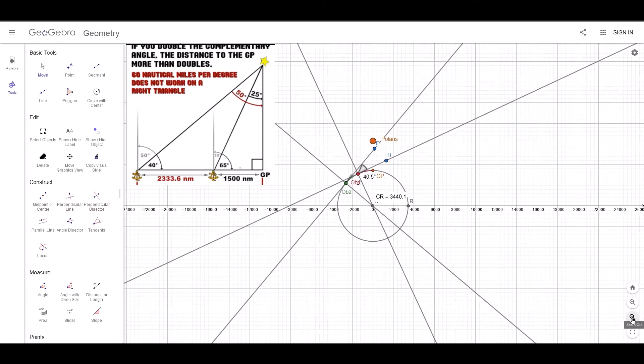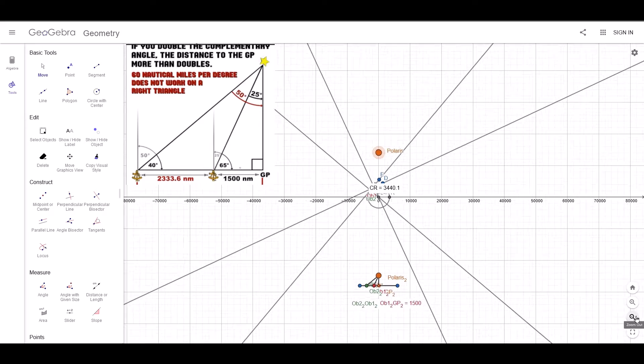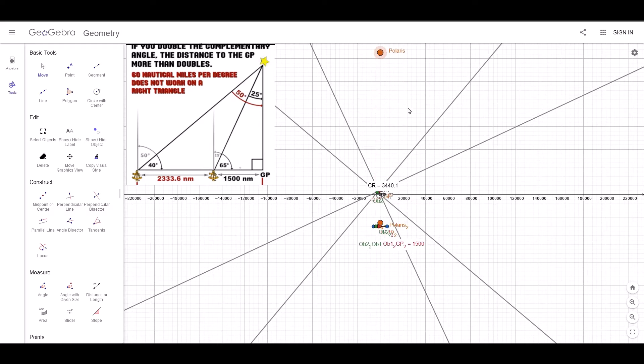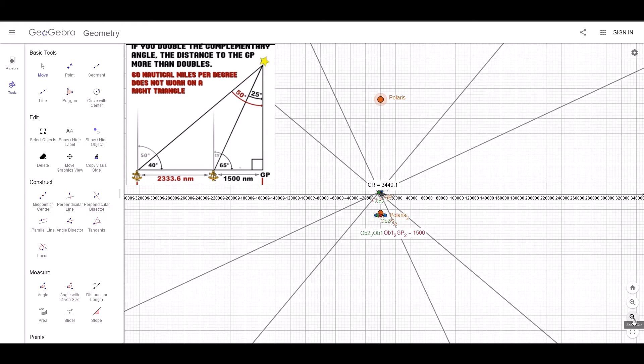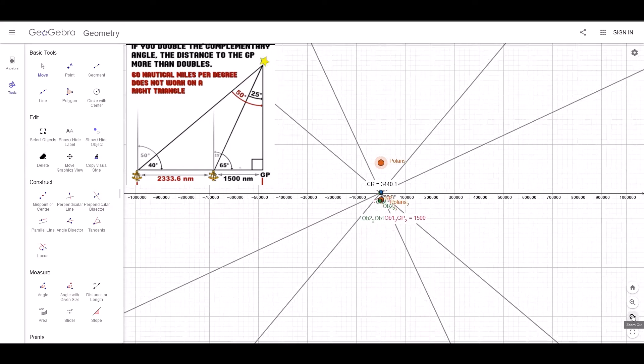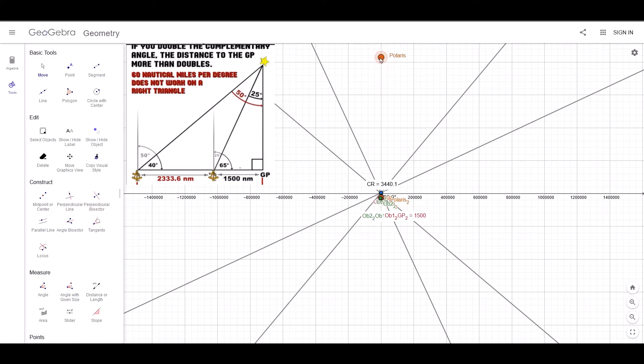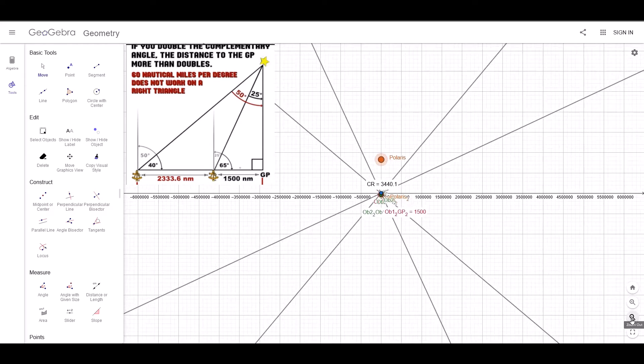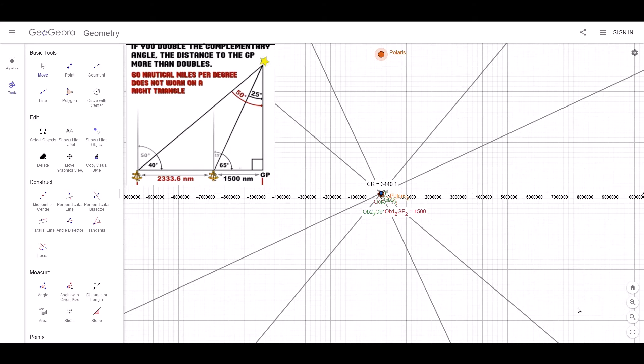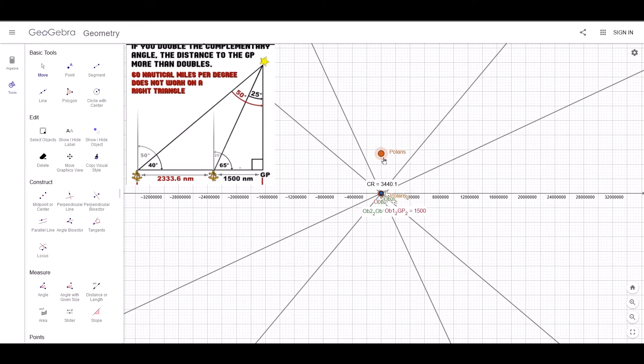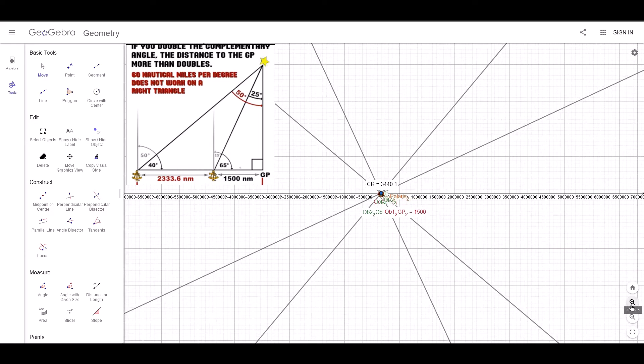So let's zoom out and we'll move Polaris further away. Not 300 light years further away, but enough so that, for all intents and purposes, the light coming from this star will be in parallel when it hits Earth. So let's zoom back into Earth and see what angles we're getting now.